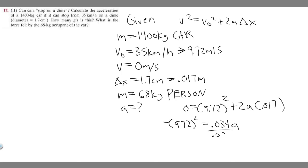If you want to solve for a, divide both sides by 0.034. So a is going to be equal to minus 9.72 squared divided by 0.034. If you go ahead and do this, keep in mind it's going to be negative.